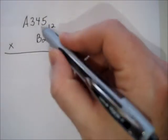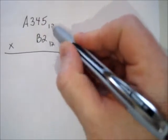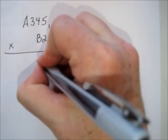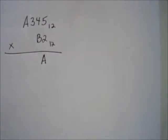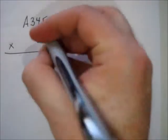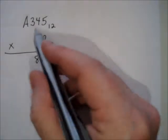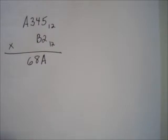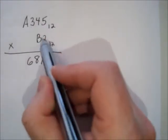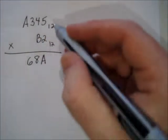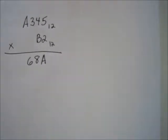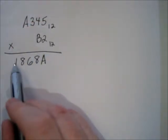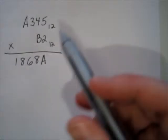Two times five is ten. Ten is smaller than twelve, so we use the numeral A to represent ten. Two times four is eight — no problem. Two times three is six — just write the six. Then two times A means two times ten, which is twenty. In base twelve, twenty is represented as one-eight, because twenty is one twelve and eight left over.